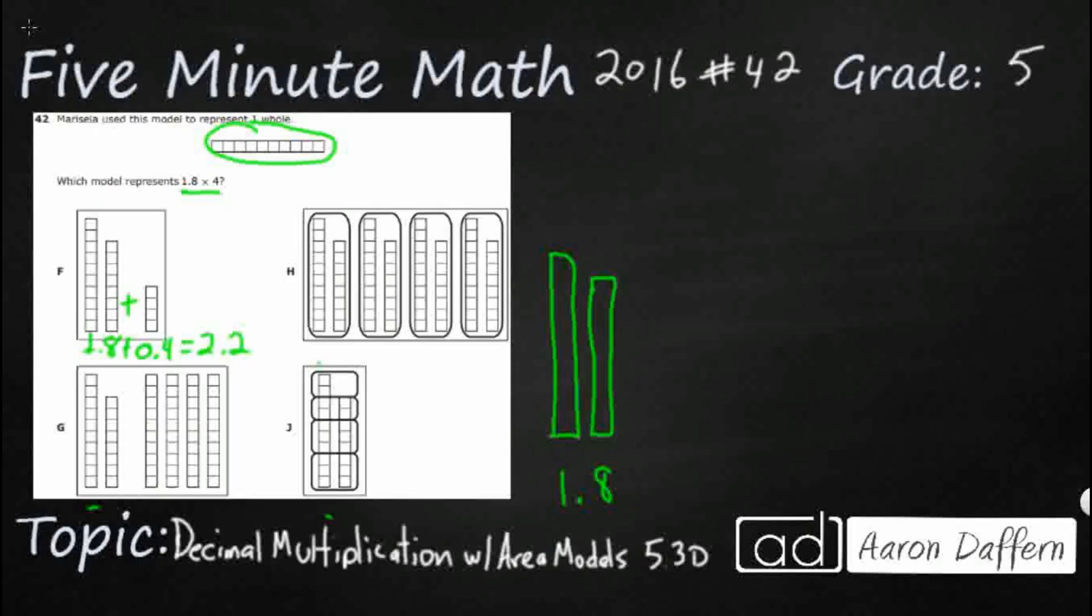How can we tell what we're looking for? Well, let's just estimate here. This is about, we're going to round this to, it's almost 2. So 1.8 is really close to 2 whole. If we multiply that by 4, we're looking for something near 8. So this 2.2 up here in F is not really going to work for us.